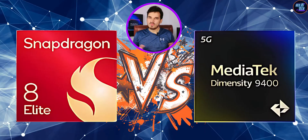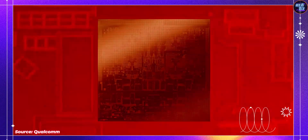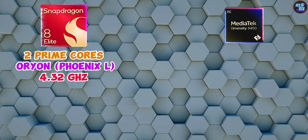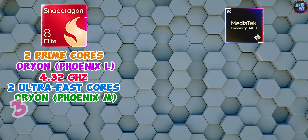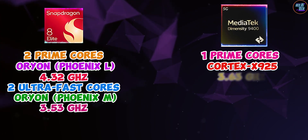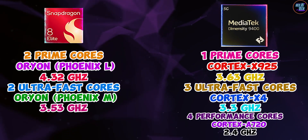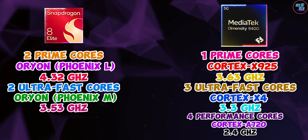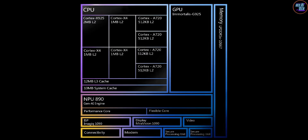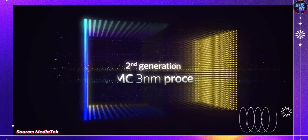Both chipsets offer top-of-the-line Geekbench 6 benchmarks because of their amazing CPU architecture. Both offer robust architectures with diverse core configurations. The Snapdragon 8 Elite stands out with two ultra-fast cores based on Phoenix L cores clocked at 4.32 GHz, and six additional ultra-high-performance cores based on Phoenix M cores clocked at 3.53 GHz. In contrast, the Mediatek Dimensity 9400 features one ultra-fast core based on Cortex-X925 clocked at 3.63 GHz, three high-performance cores based on Cortex-X4 clocked at 3.3 GHz, and four performance cores clocked at 2.4 GHz. The Snapdragon 8 Elite also benefits from an enhanced L2 cache of 24 MB. Both chipsets utilize the ARM v9.2-A instruction set and are manufactured using TSMC's 3nm process node.